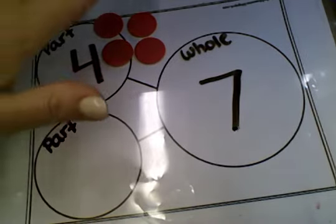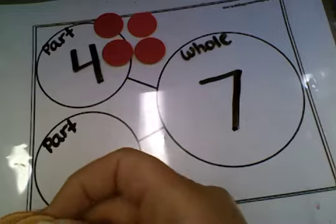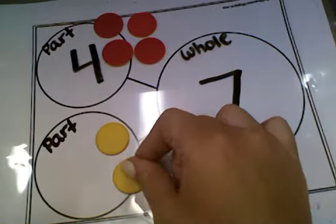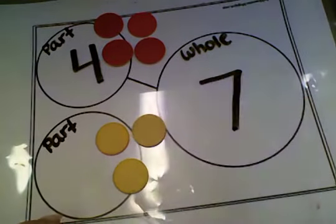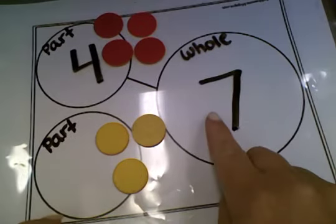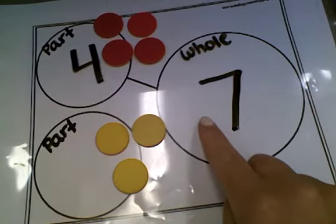Four. Five. Six. Seven. I stop when I get to seven because I'm looking for how many up until seven.